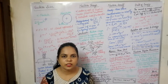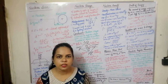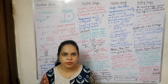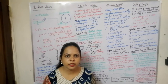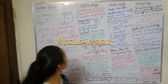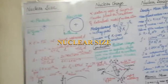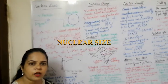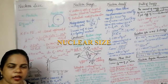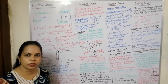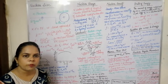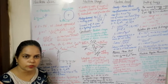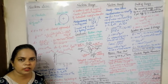Hello students. Today we shall be discussing some properties of the atomic nucleus. The first property we are going to study is the nuclear size. As we all know, in the nucleus there are protons and neutrons, and electrons are revolving outside the nucleus. The main constituents of the nucleus are the protons and the neutrons, which affect the size.